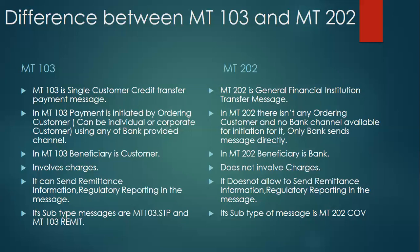MT103 can send remittance information and regulatory reporting information in the message, as it has tag 70 and tag 77. In MT202, we do not have these tags, so you cannot send that information. MT103 has two subtypes: MT103 STP and MT103 REMIT. MT202 has one subtype called MT202 COV.